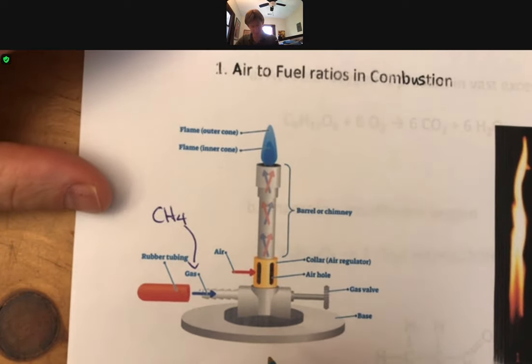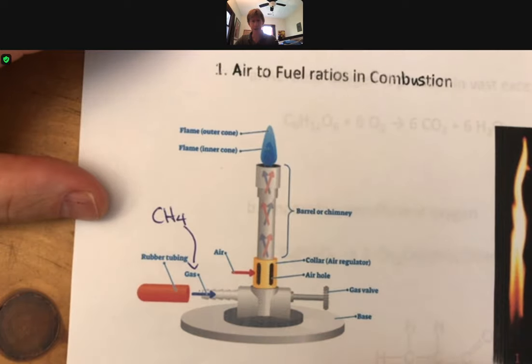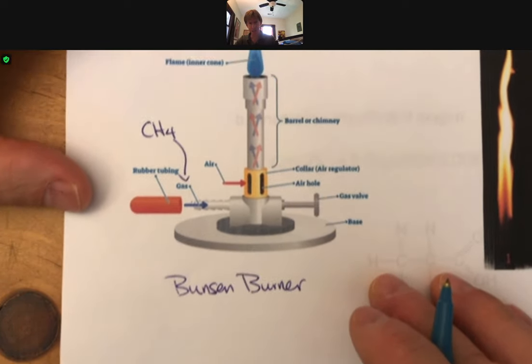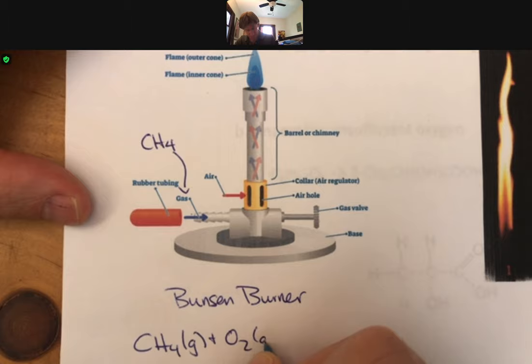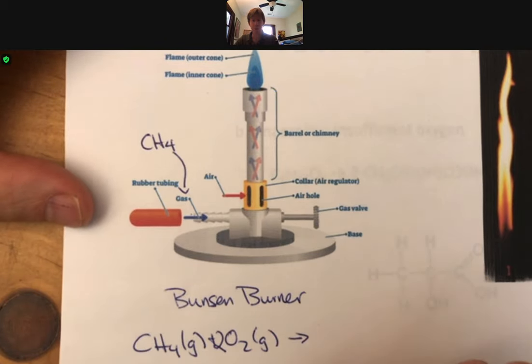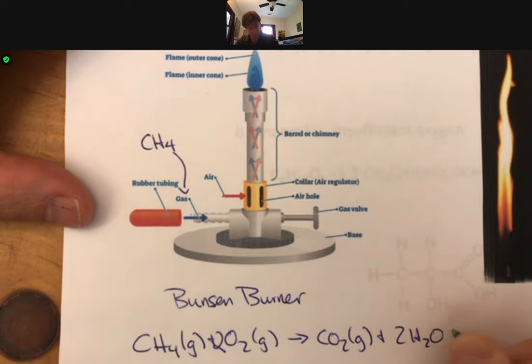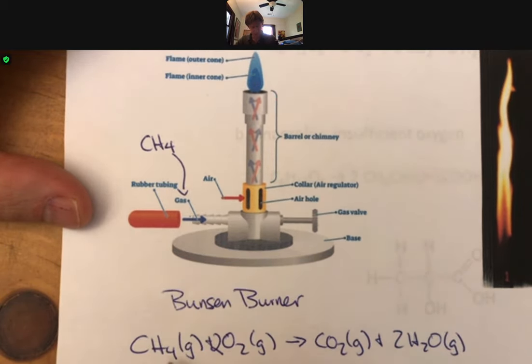So what you've got for a Bunsen burner, the reaction you're looking at is CH4 combustion plus O2 gas. Might as well balance this: two moles of oxygen goes to one mole of carbon dioxide and two moles of H2O gas. You can choose how much methane, how much gas, and how much oxygen gets in.